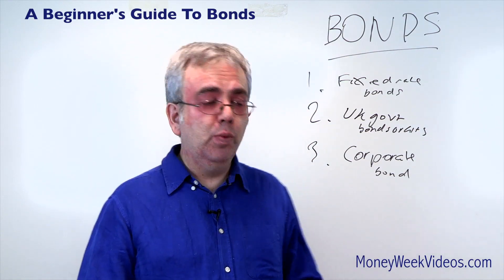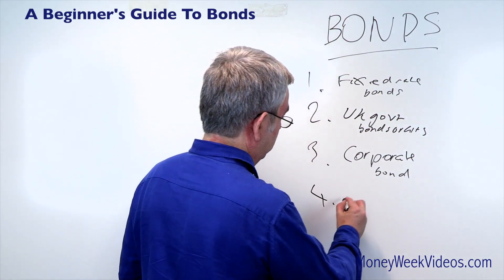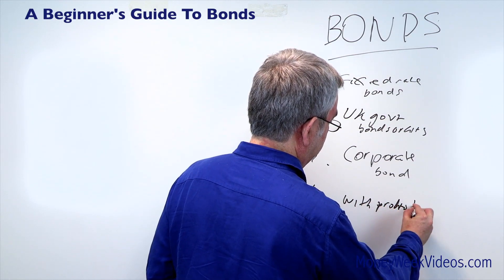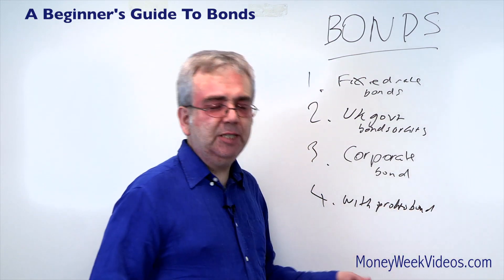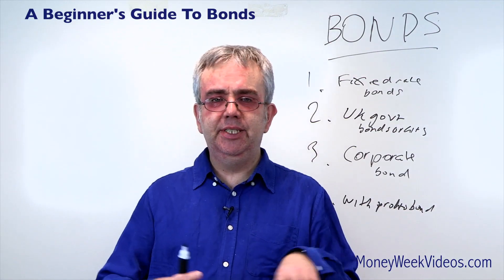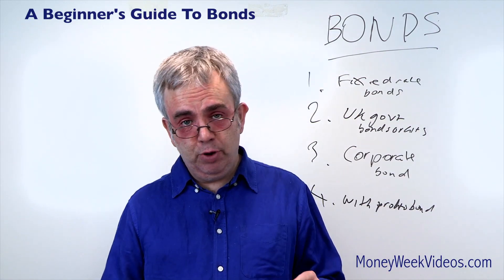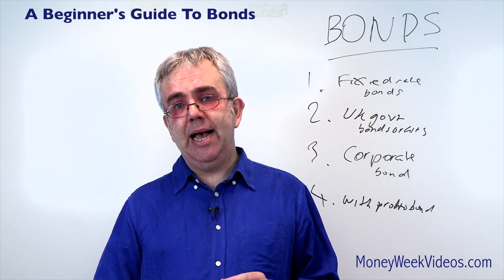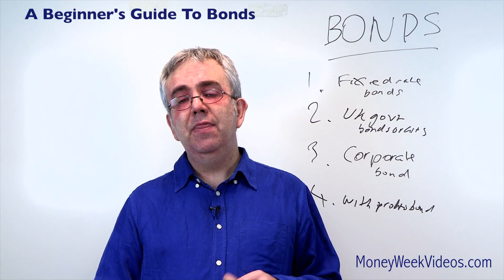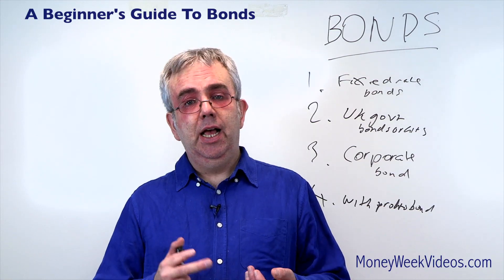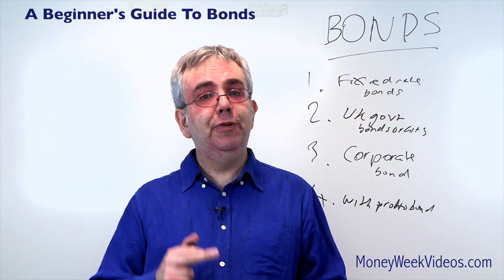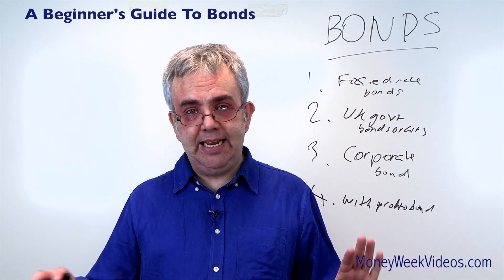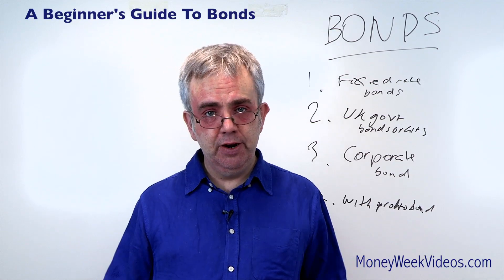The next kind of bond is the with profits bond, or investment bond. Strictly speaking, investment bond also covers some other kinds of bonds, but they're all pretty much the same. With profits bonds and investment bonds were very popular back in the 60s and 70s but are now largely discredited — the charges are too high and the performance has been very disappointing. If anyone tries to sell you a with profits bond, steer clear. Put your money somewhere else; don't go near them.